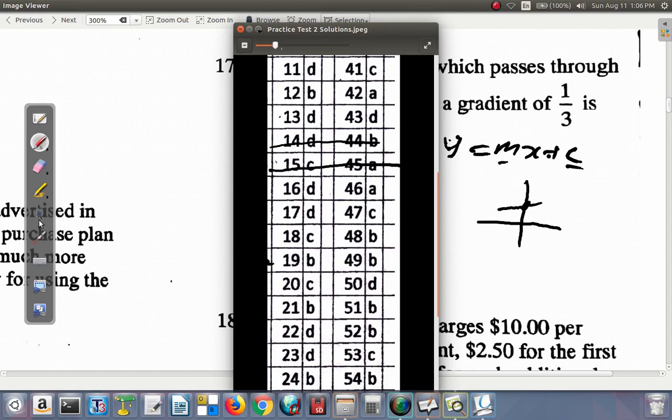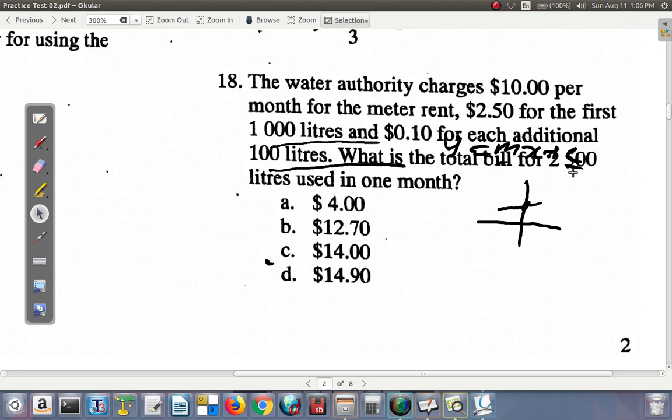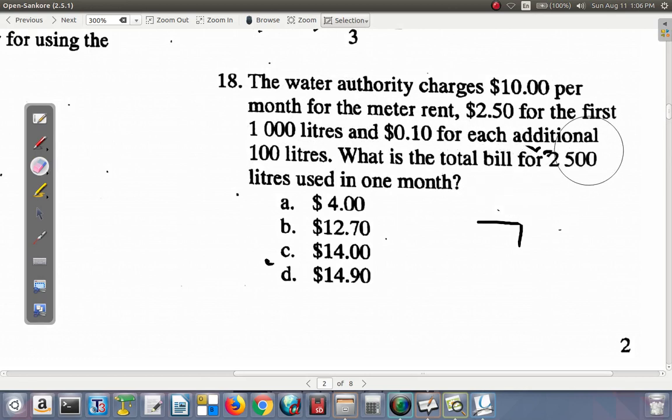And remember, let me remind you again, you should have done these questions already, right? And even if you didn't do all the questions, when you reach a certain question that you did not do, make sure you pause, do that question, and then watch the video after. Now, the water authority charges $10 per month for the meter rent, $2.50 for the first 1,000 liters, and $0.10, that's 10 cents for each additional 100 liters.